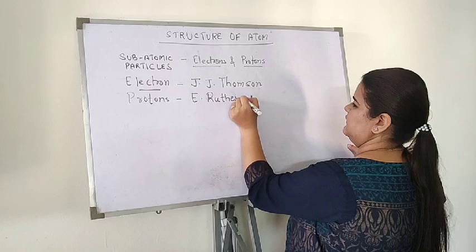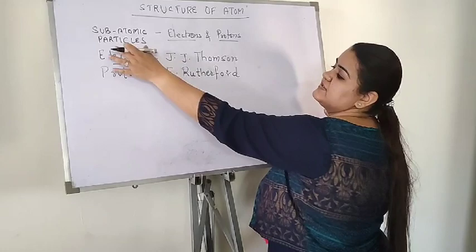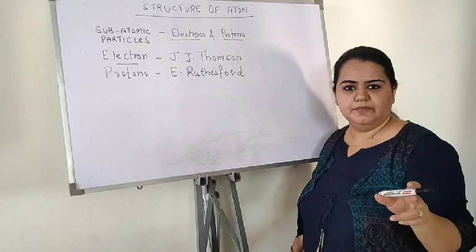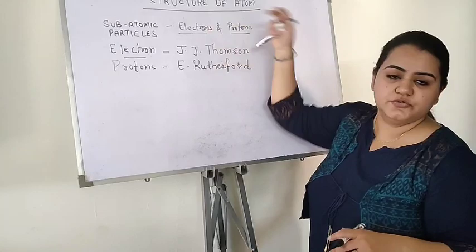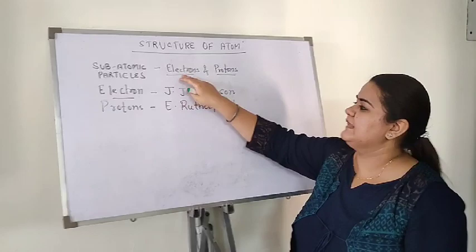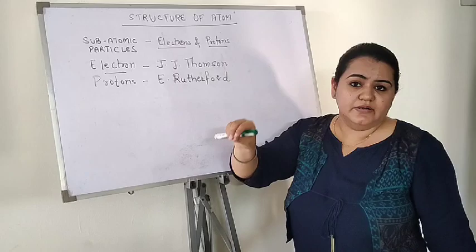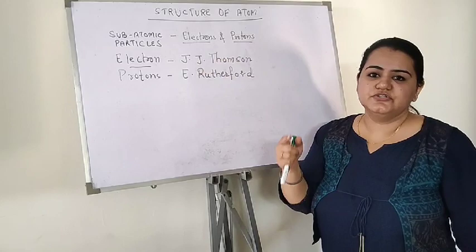Please remember these subatomic particles: electron and proton. But there is one more subatomic particle — the neutron. I have not mentioned it yet because electron and proton were the first discovered, and at that time scientists did not know that a neutron-like particle also exists.